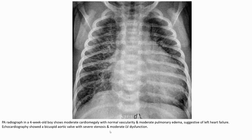On chest radiograph, moderate cardiomegaly with normal vascularity and moderate interstitial edema, suggestive of left atrial dilatation. On echocardiography, a bicuspid aortic valve with severe stenosis and moderate left ventricular enlargement is demonstrated.